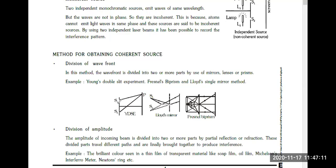We will discuss YDSE. When you see this structure, what we do is we have a light source — one source — and this source is divided into two parts. We have one screen with two tiny slits. The same light will go through these two slits. Usually, we keep the source on the perpendicular bisector of S₁ and S₂, so that up to S₁ and S₂ we don't have any path difference.